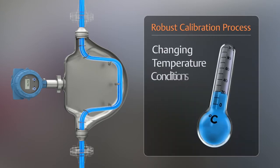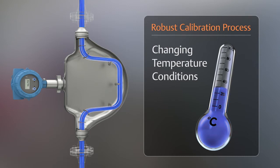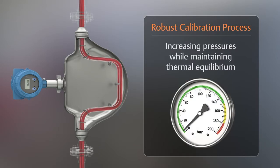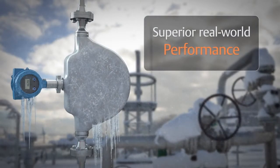The meter is also calibrated for temperature, starting at room temperature and then at elevated temperatures. The calibrations are also conducted with increasing pressures, while maintaining thermal equilibrium between the fluid, the meter, and the environment. This allows the meter to achieve superior real-world performance.